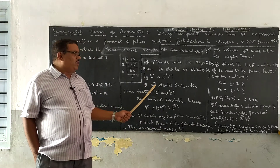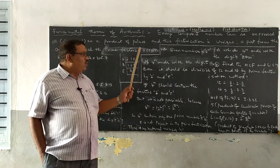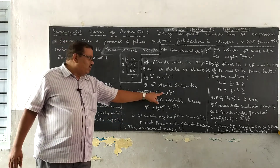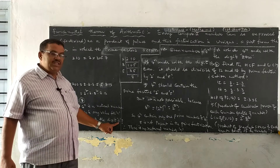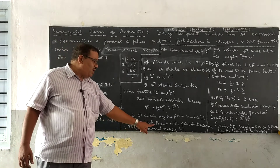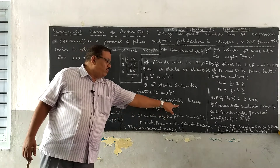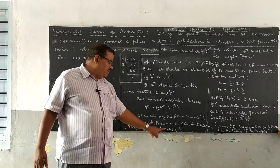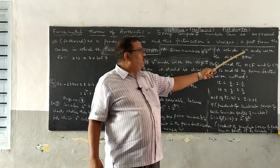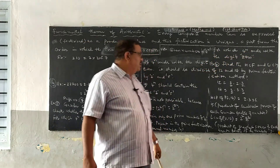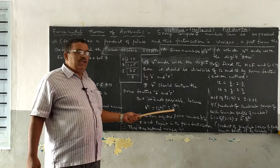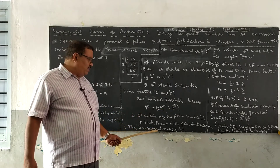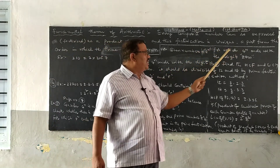Once again: 4 power n should contain the prime factors 2 and 5 for it to end with the digit 0. But here 5 is not present, because 4 power n can be written as 2 power 2n only — there is no 5. So there is no natural number n for which 4 power n ends with the digit 0.